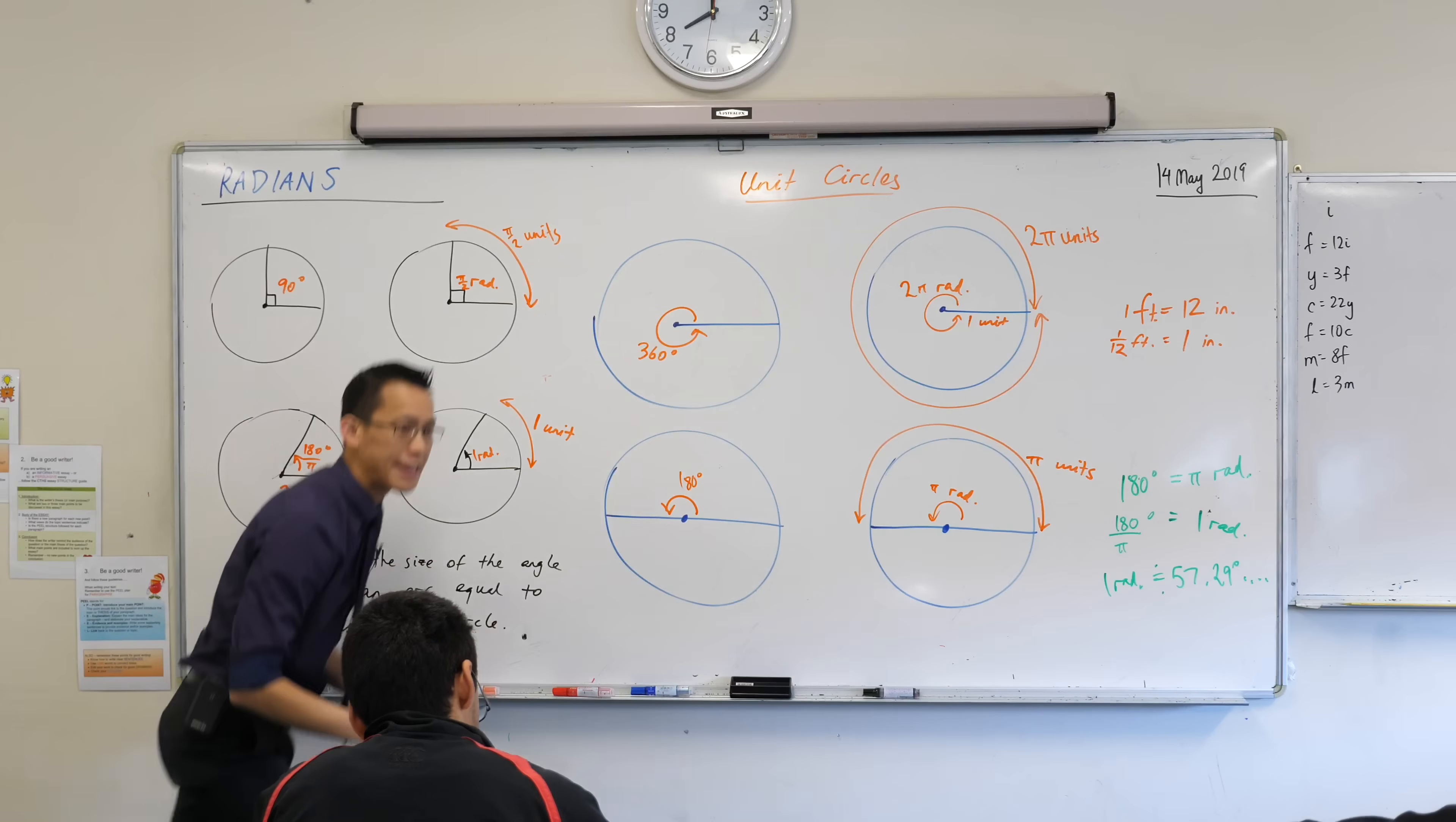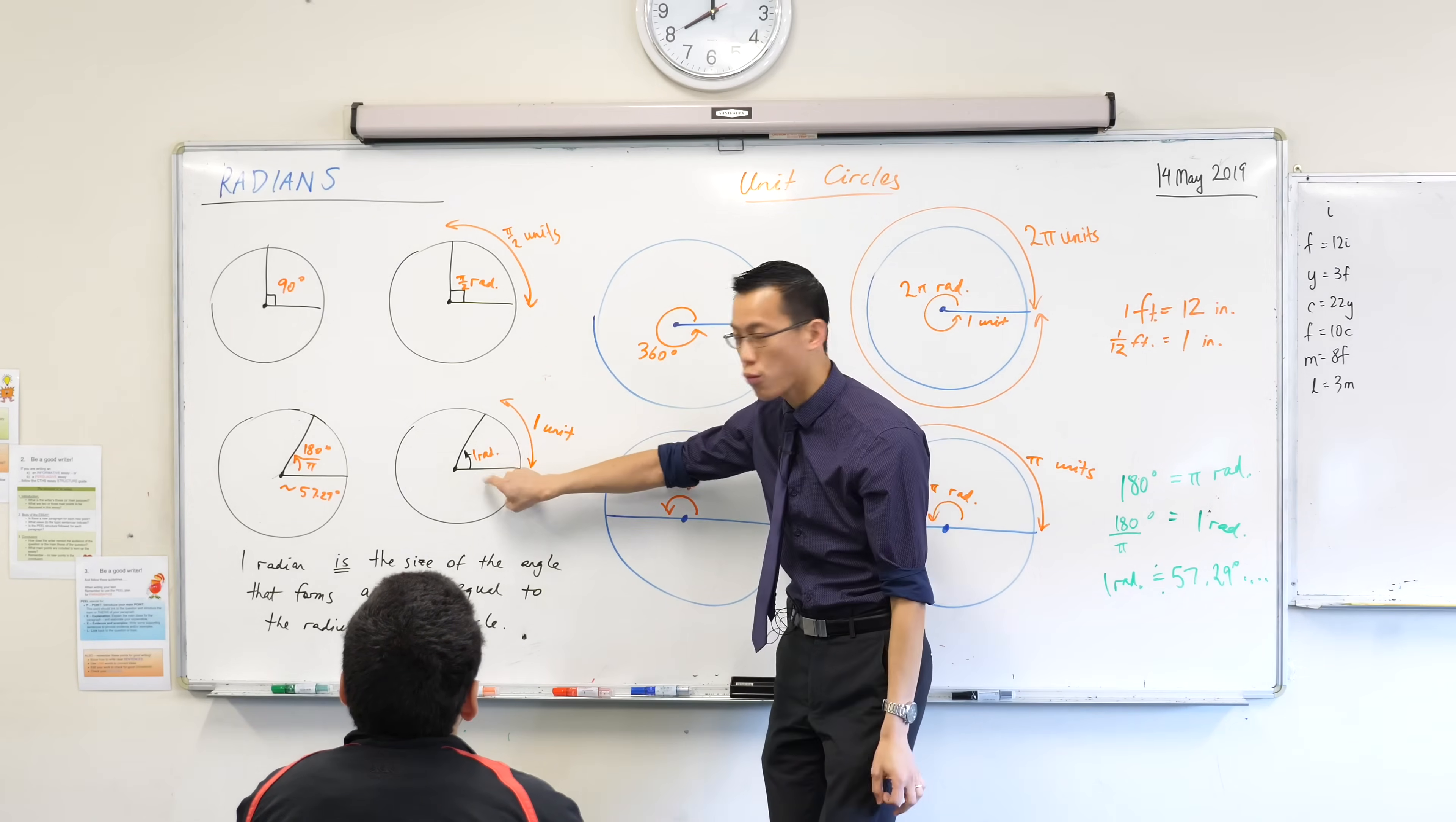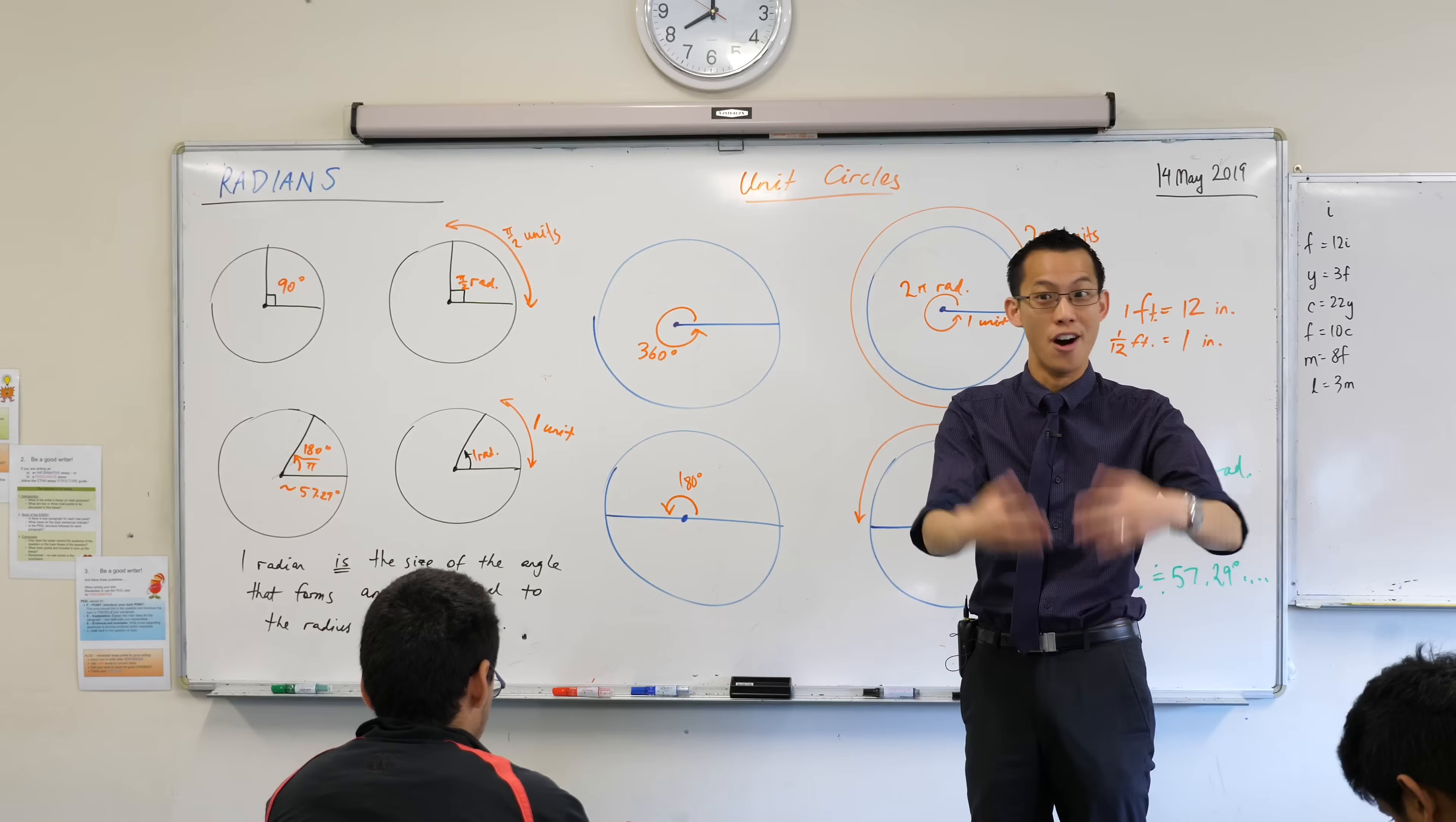That's what a radian is. A radian is however far you need to turn so that the arc you make is the same, it matches the radius of the circle that you're in. What's really nice about this is we didn't have to actually do unit circles to demonstrate this. We could have picked circles of any size, which is why in fact you did draw circles of any size.